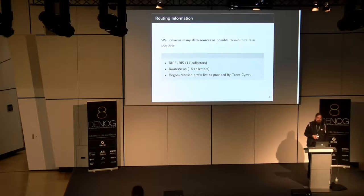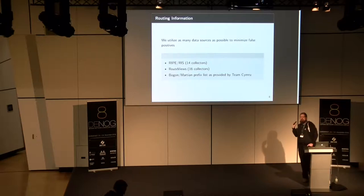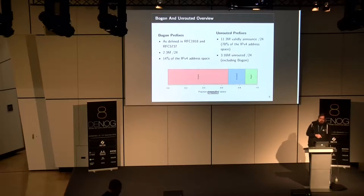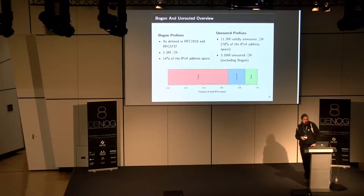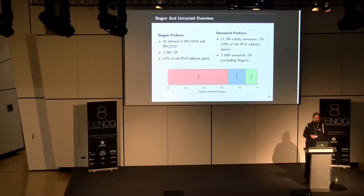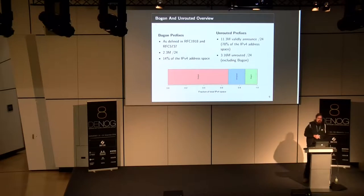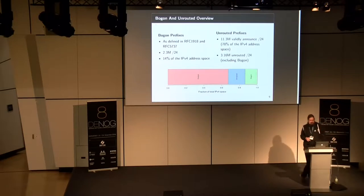By the way, you can use the lists that CAIDA provides to configure your routers — they have pre-compiled lists for that. Now how does this IP space look? We have our Bogon prefixes: 2.3 million /24s, that's 14% of the IPv4 space. We only look at IPv4 currently — we plan to do v6 but v4 is sufficient for this purpose right now.